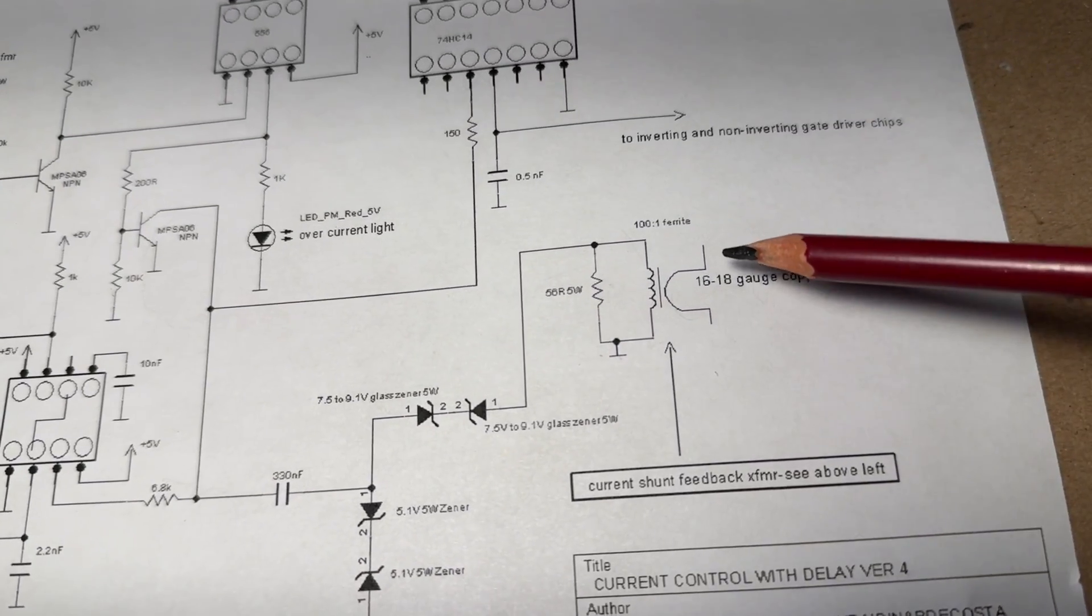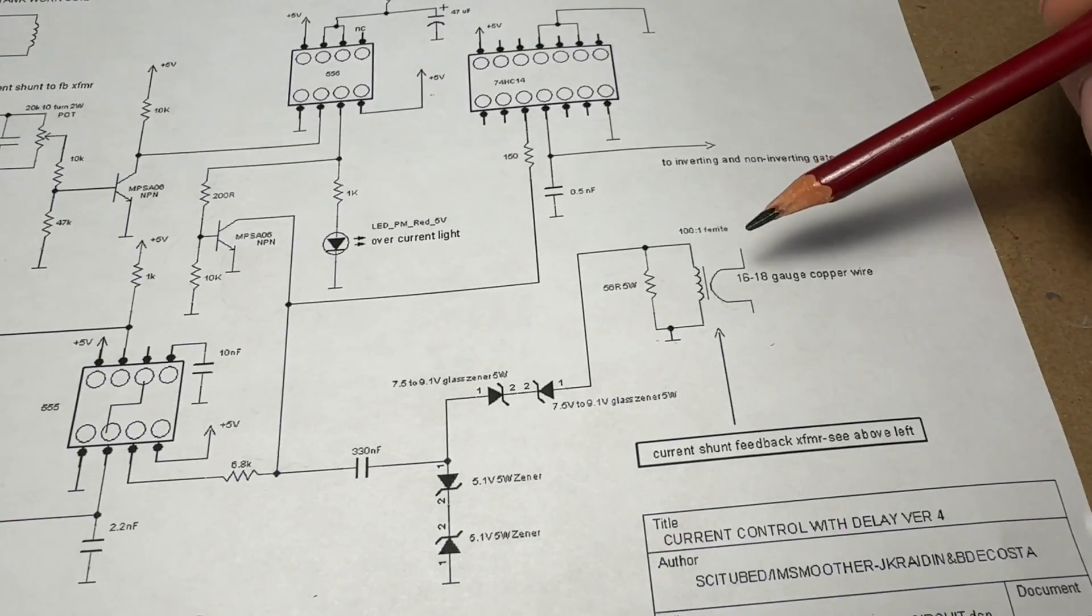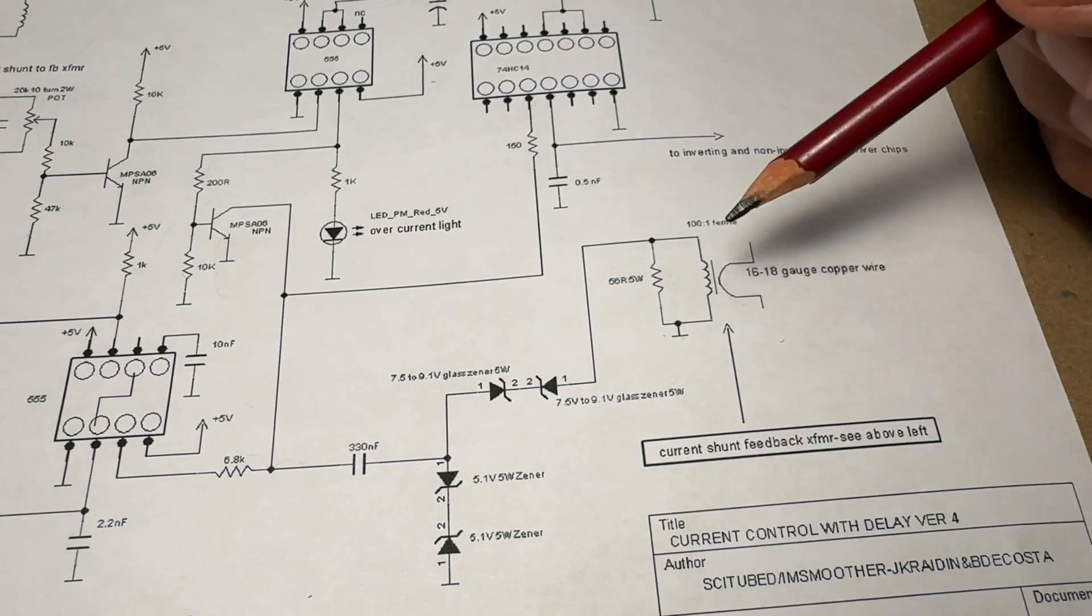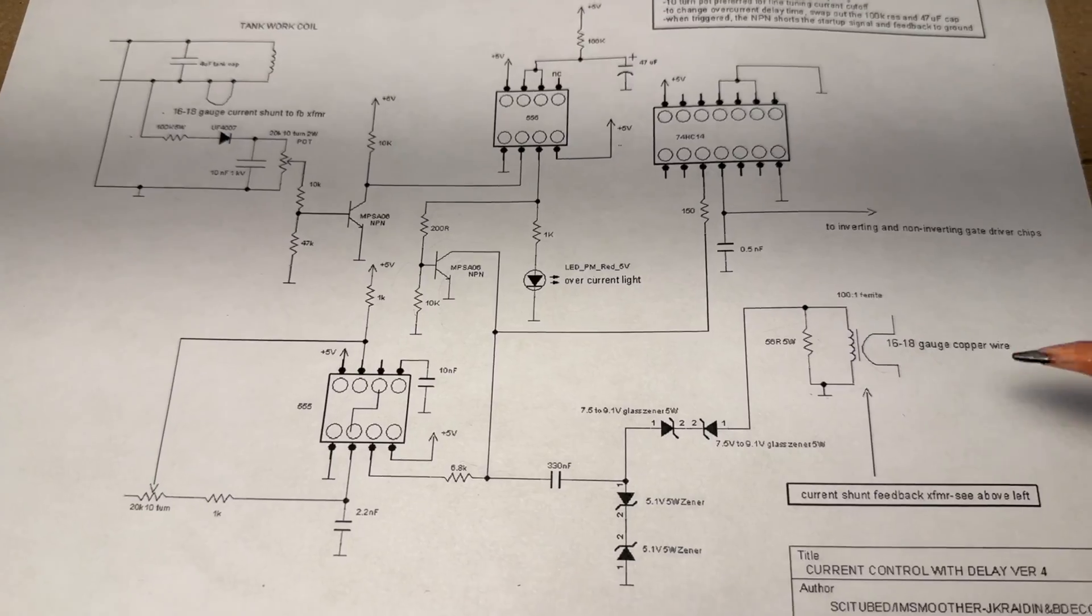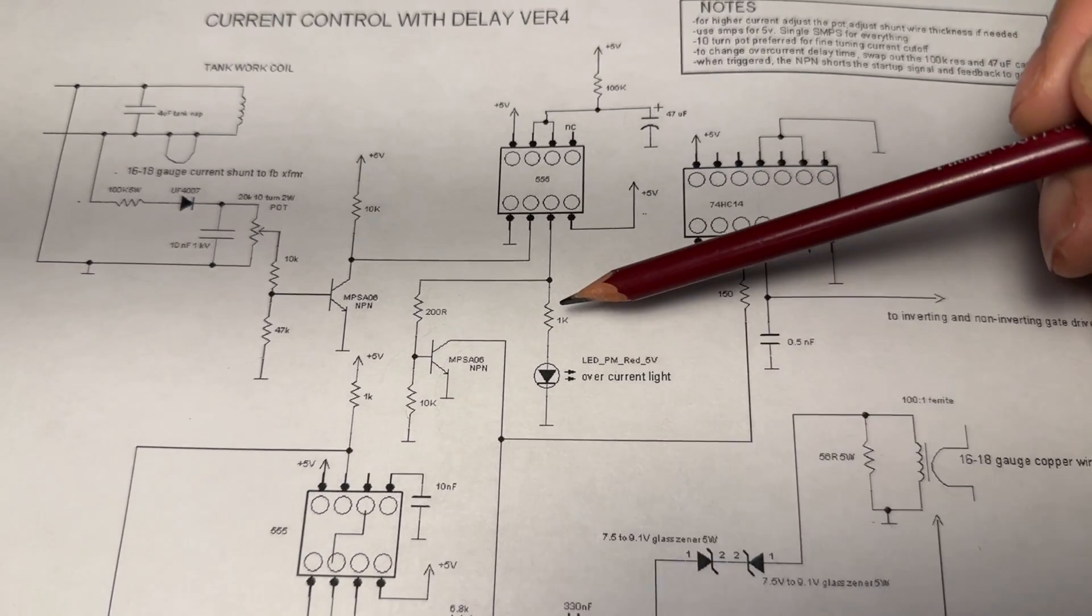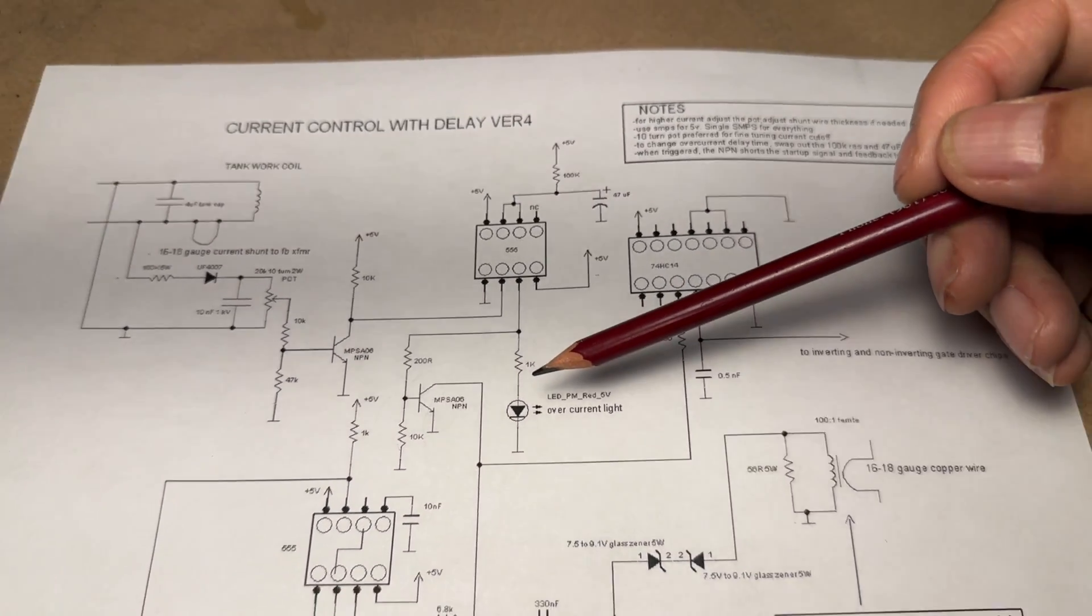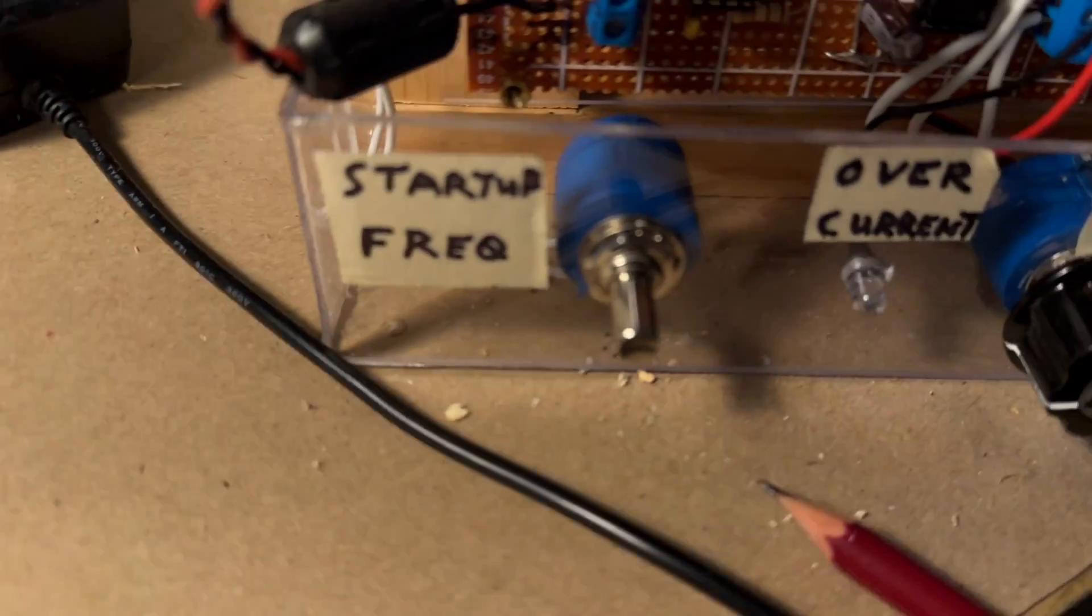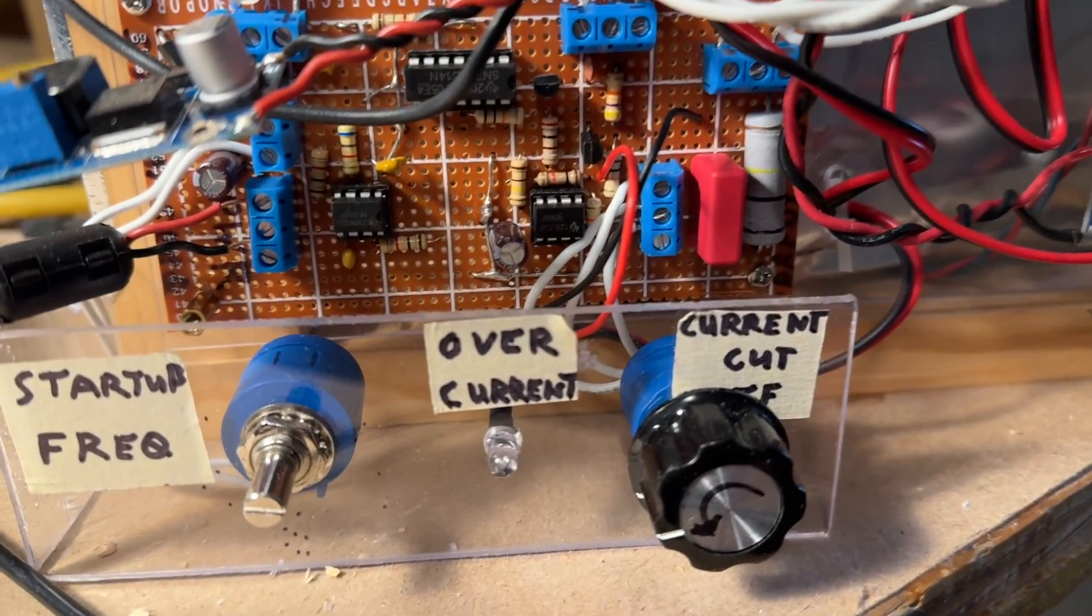Over here is the feedback which is basically a shunt. It's a wire shunt which is coupled to this 100 turn ferrite transformer. I've actually added here a little indicator light to show that there's an overcurrent situation in progress. You can see that little indicator light here and this is what the circuit looks like when it's on perf board.